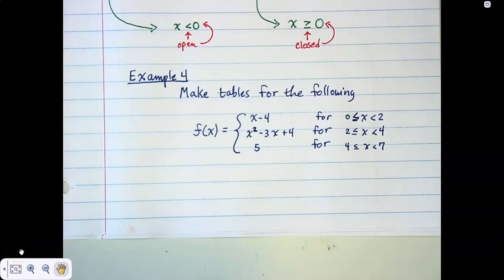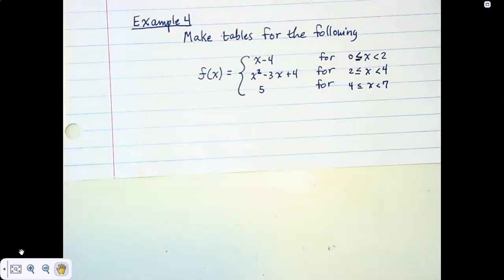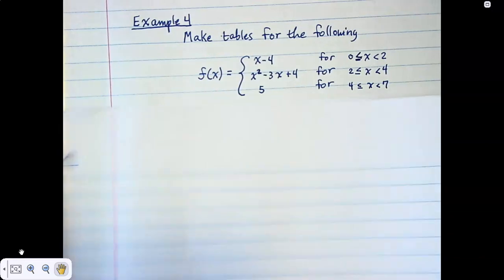All right, so here's Example 4 and again, we're going to still do the same thing of just making tables. We're not graphing anything out, that's what we're going to do for Example 5. We're going to graph things out from tables. But for right now, Example 4 is another practice of making tables and making sure we're good. So let's do this and again we know that there's three...